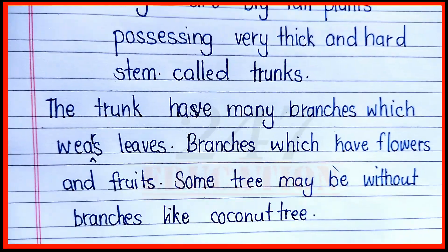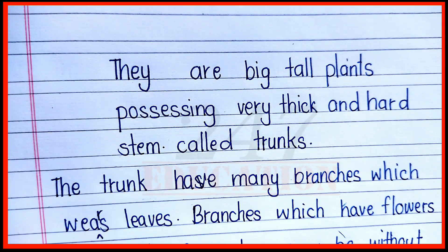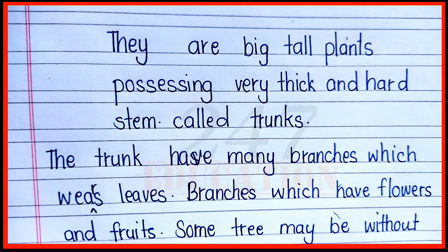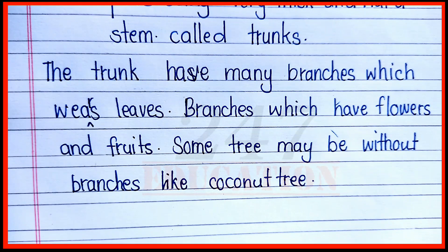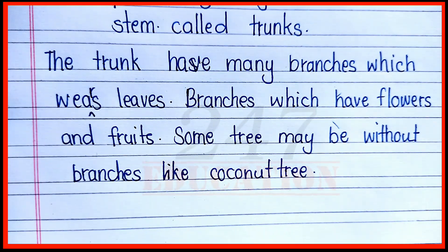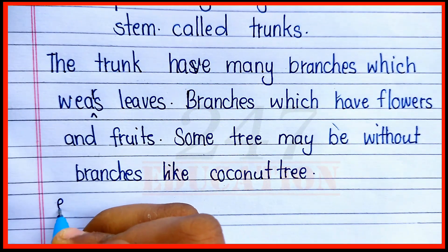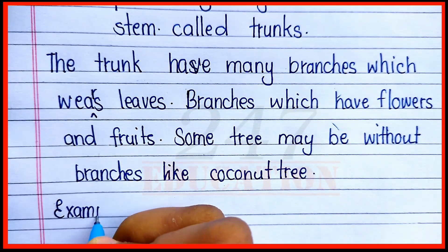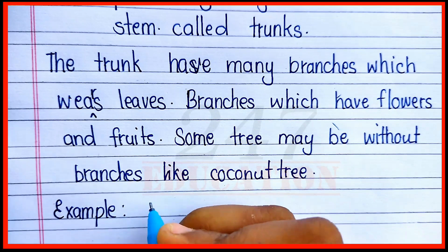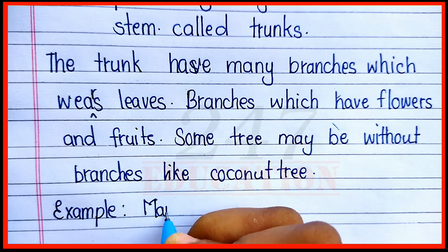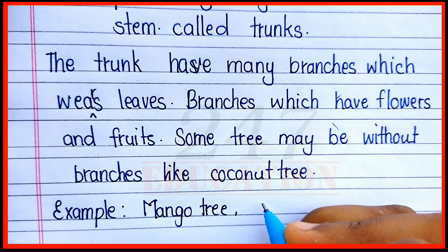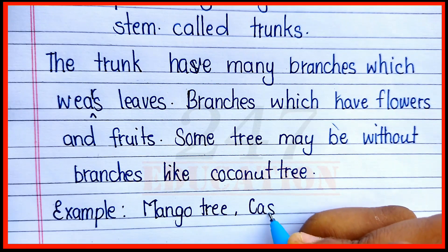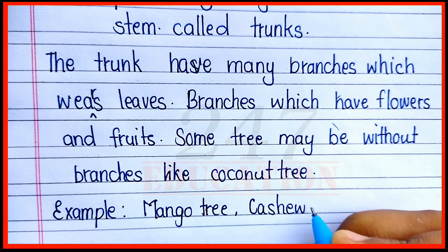They are big, tall plants, possessing very thick and hard stem called trunks. The trunk have many branches, which wears leaves. Branches which have flowers and fruits. Some trees may be without branches, like coconut tree. Examples: mango tree and cashew tree.